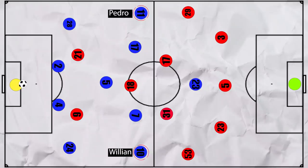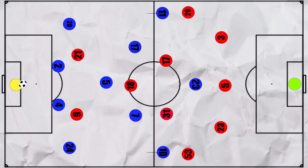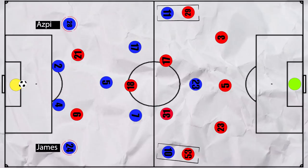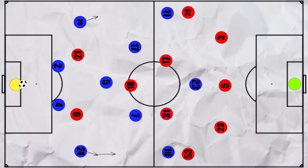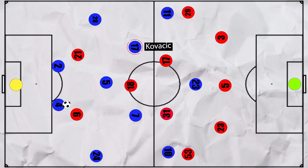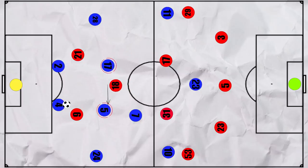However, when deep in the build-up, Chelsea could keep their wingers high and wide to pin United's wing backs back. This left James and Azpilicueta free at times to receive the ball and advance it up the pitch. Chelsea often looked to counter United's press by moving into a 4-2-3-1, with Kovacic and Jorginho as the double pivot, whilst Kante initially and soon Mount would move higher up the pitch.